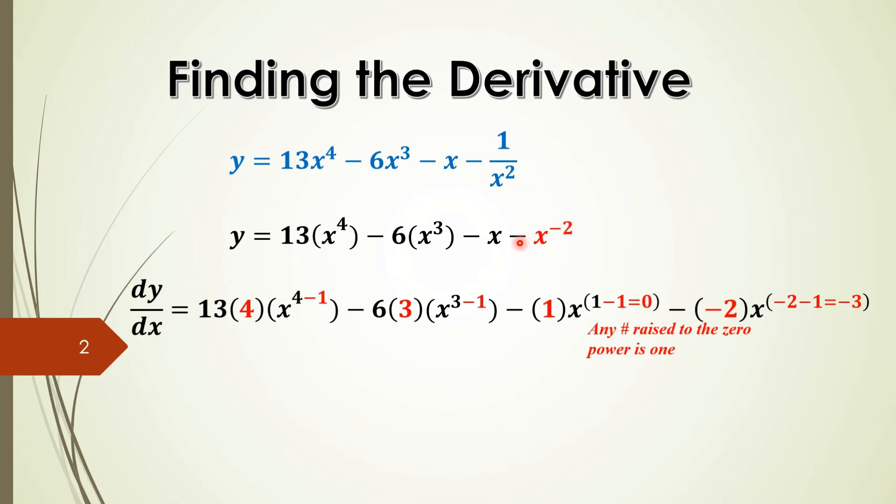You're taking minus 2. Multiplying a minus will give you a plus 2, x to the minus 3. So that's what we have here. And let's go and look at the next step of this.